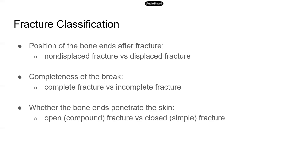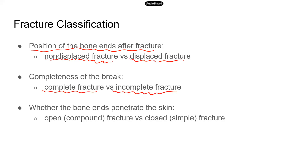First, position of the bone ends after fracture: if the ends of the bone retain the normal position, that is a non-displaced fracture. If the ends of the bone are out of normal alignment, then that's a displaced fracture. In terms of completeness of the break, if the bone is broken through, that's a complete fracture; if not, that's an incomplete fracture.